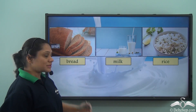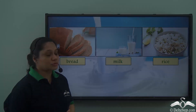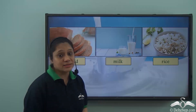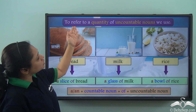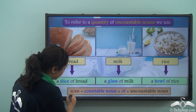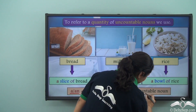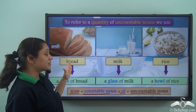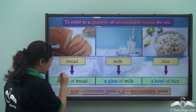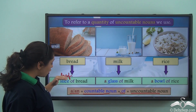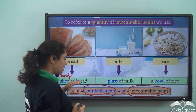Now let us look at these nouns: bread, milk, rice. These nouns are common nouns as well as uncountable nouns. So we cannot say one bread, one milk, one rice. To refer to a quantity of uncountable nouns, we use 'a' or 'an' with a countable noun, followed by 'of' and then the uncountable noun. For example, bread is an uncountable noun, and to refer to a quantity of bread, we say 'a slice of bread' or 'a loaf of bread.' Loaf and slice are the countable nouns used with the uncountable noun bread.